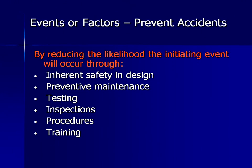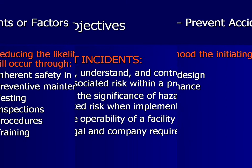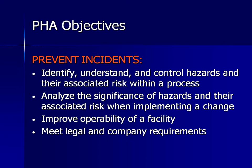How can we reduce the likelihood of an accident? Safe designs, preventative maintenance, testing, inspections, procedures and training will reduce the initiating event from occurring. The objective of a PHA is to prevent incidents by identifying risk, analyzing the significance of that hazard, improving operations, and meeting legal and company requirements.